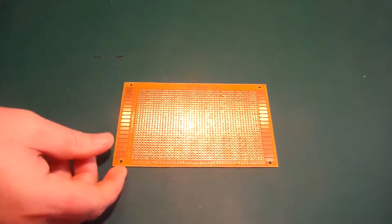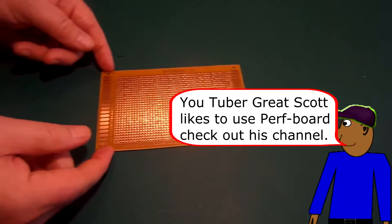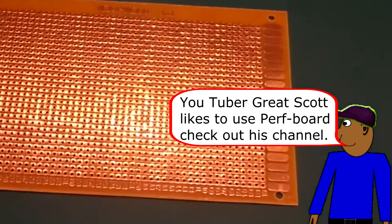So we're going to use a piece of 30 by 30 hole stripboard. Note stripboard has copper running in tracks on one side as opposed to perfboard which does not and just has copper holes.